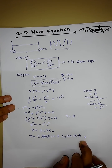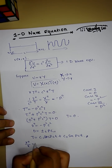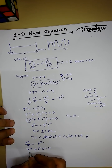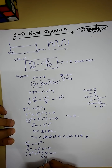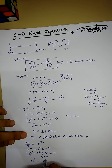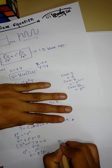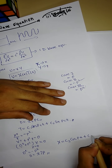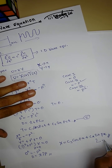From the X side, we get X''/X = −p², giving X'' + p²X = 0. The characteristic roots are ±ip, and the general solution for X is: X(x) = c₃ cos(px) + c₄ sin(px).